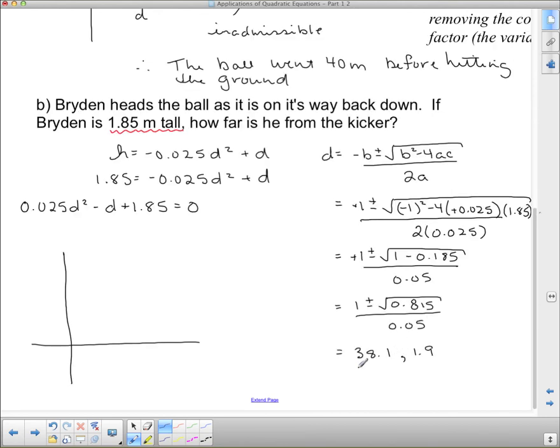So here's our answer, 38.1 and 1.9. Now, we have to decide which one of these is good and which one is inadmissible. So if I think about what's happened here is the ball's gone up and come down and Bryden has headed the ball. He's at 1.85.